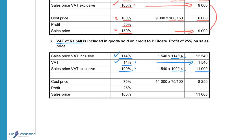When calculating the cost price, we must consider whether profit is on sales price or cost price. In this case, profit is on sales price. Therefore sales price is 100%, profit 25%. Since we make a profit, cost price must be less, so we subtract 25% and cost price equals 75%. The sales price equals 11,000, so to calculate the cost price: 75 divided by 100 times 11,000 gives 8,250.